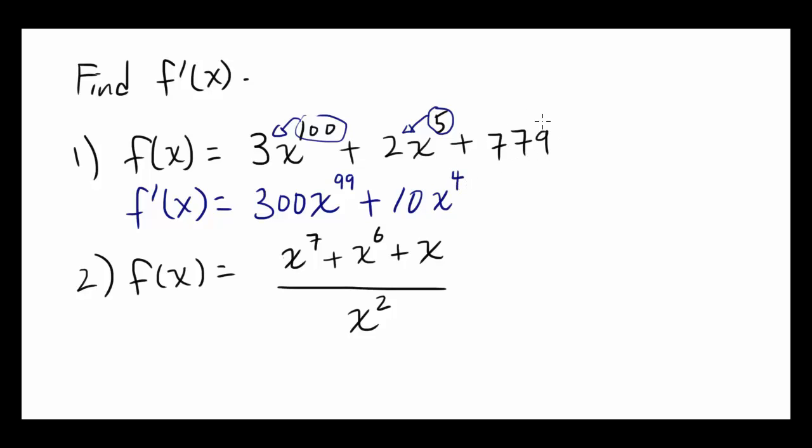Now, 779, that's constant, you don't have any variables attached to it. So when you take derivative, you're going to get 0, so you don't have to put anything down for 779.